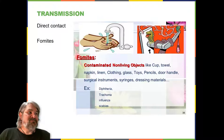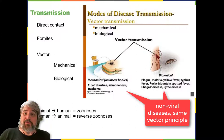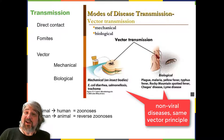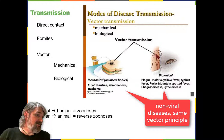Viruses can also spread through a vector—an animal that transmits a pathogen from one host to another. Arthropods such as mosquitoes, ticks, fleas, and flies are typical vectors for viral disease, and they may act as mechanical or biological vectors. Mechanical transmission occurs when the arthropod carries a viral pathogen on the outside of its body and transmits it to a new host by physical contact, like a fly picking up a pathogen from a trash can and landing on your sandwich.